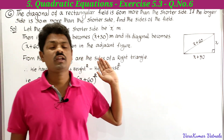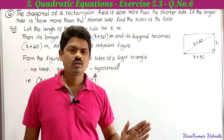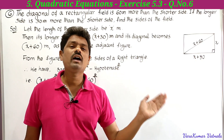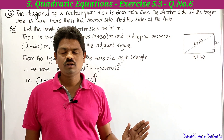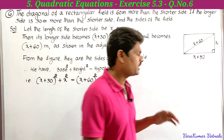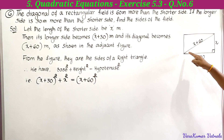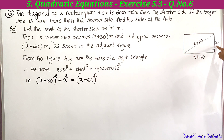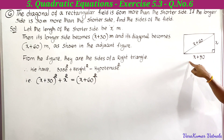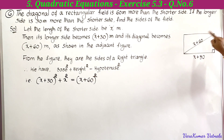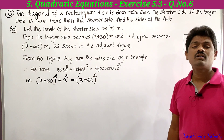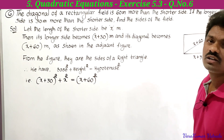We are given a rectangular field. The diagonal and the longer side are both being compared to the shorter side, which we don't know. So here is the rectangular field — this is the shorter side, generally known as breadth; this is the longer side, known as length; and this is the diagonal. The diagonal is 60 meters more than the shorter side, and the longer side is 30 meters more than the shorter side.